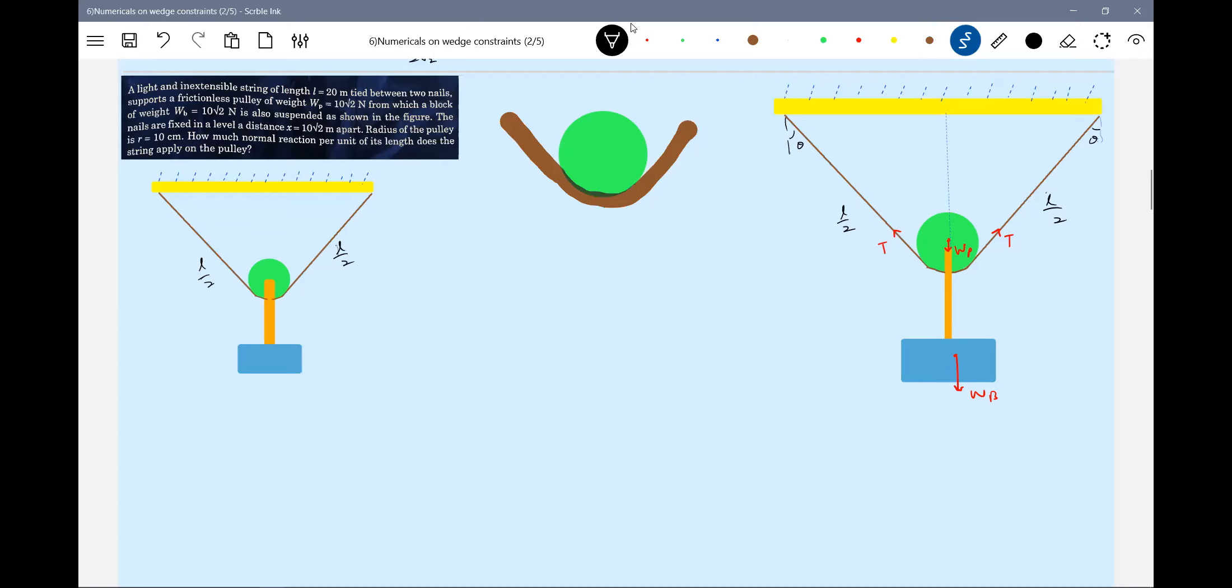It is in contact only in this region. Afterwards it's not in contact. Only a small part of the segment of the rope will be in contact. So here, the rope will exert force on the pulley like this.